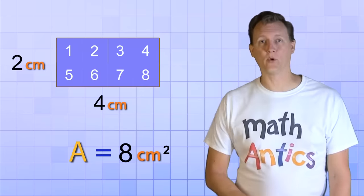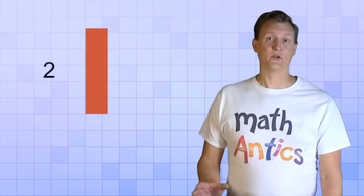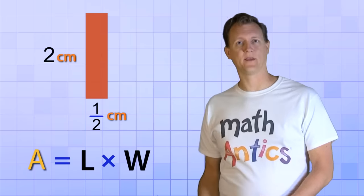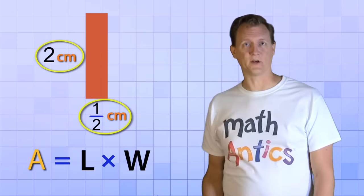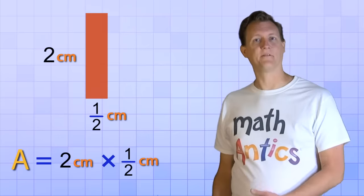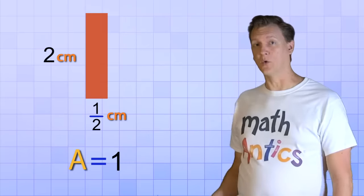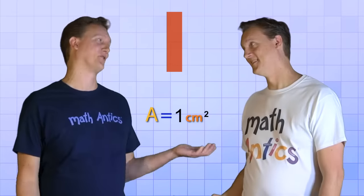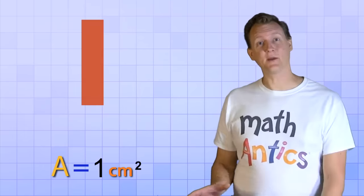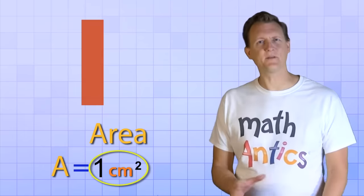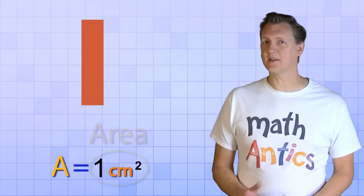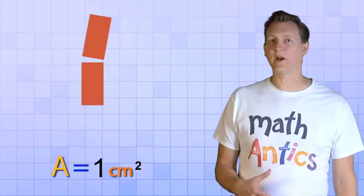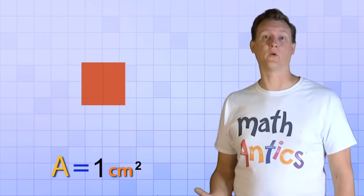Let's try our formula on one more rectangle. This rectangle is 2 centimeters long but only half a centimeter wide. Our formula, area equals length times width, tells us to multiply these two sides together — and we get 1 square centimeter. How could that be a square centimeter if it's not even a square? Just because a shape takes up 1 square centimeter of area doesn't mean it has to be a square shape. It just means the total area is equal to that of a square centimeter. You can see that if we break the rectangle in half and rearrange it, it would form a square.